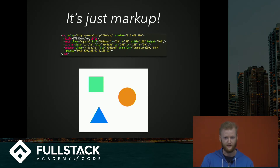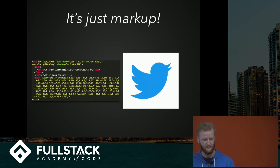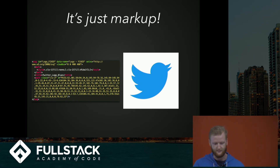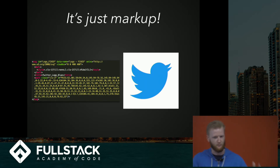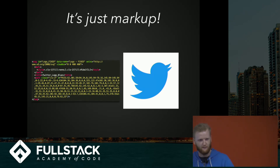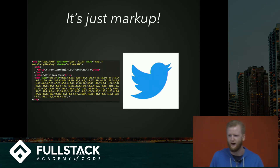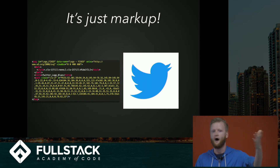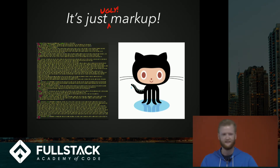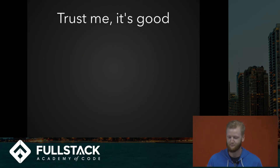If we take a look at the markup for that Twitter logo, it's actually pretty... okay, so it's pretty unintelligible. But you can still see there are these little number pairs separated by a comma — that's an X and Y coordinate. And M means move to that X and Y. There's a C for curve, A for an arc. It's not too bad — still pretty complicated, but you can at least parse a little bit what's going on. But when we're talking about something more complicated, like the SVG GitHub Octocat, the markup is bad. But it's still a really powerful tool, for a few reasons I'll go over.